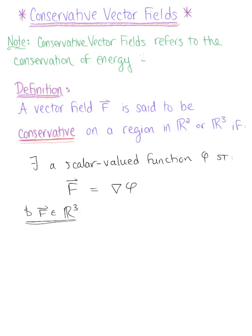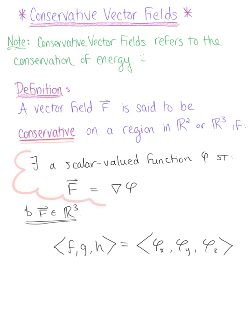If F is conservative, then the vector with components F, G, H is equal to the vector with components composed by the partial derivatives of phi with respect to each variable. So again, a vector field is said to be conservative in R2 or R3 if there exists a scalar-valued function such that vector F is equal to the gradient of the potential function, or the gradient of phi.